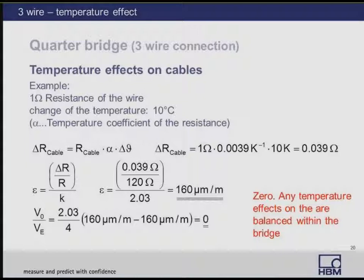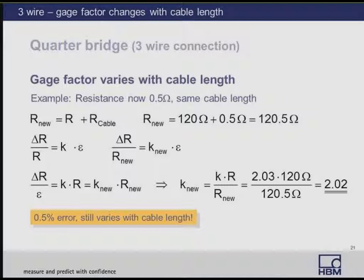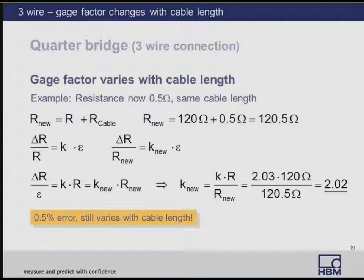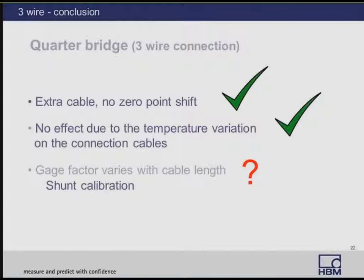The last issue with a three-wire configuration is the effect on the gauge factor. The additional cable length does cause a change in gauge factor result. This signal loss occurs due to cable resistance and can be considered a reduction in the effective gauge factor. The lead resistance adds 0.5 ohms to the strain gauge, and solving for K, the gauge factor changes from 2.03 to 2.02 — a 0.5% additional error caused by the leads. In conclusion, a three-wire connection eliminates zero-point shift and lead wire temperature variation concerns, but the gauge factor still varies with cable length and needs to be considered.